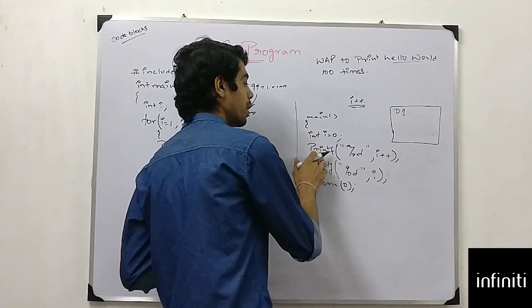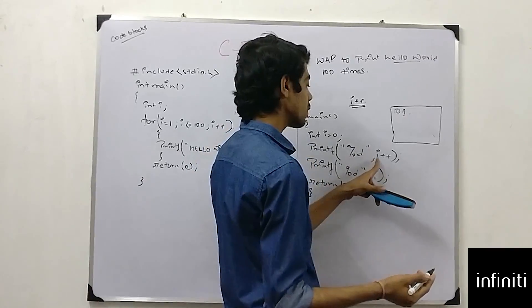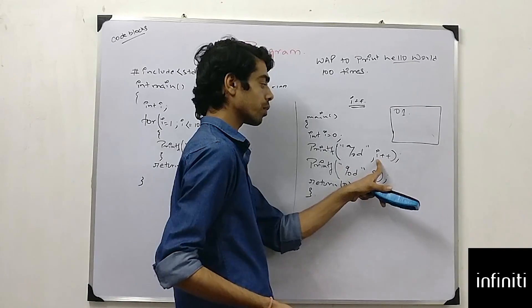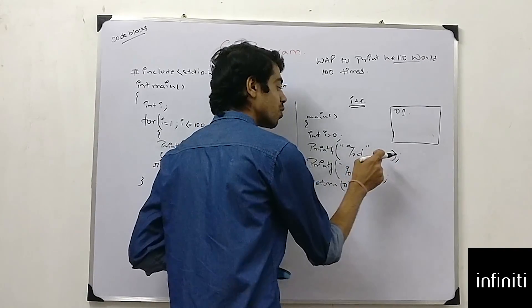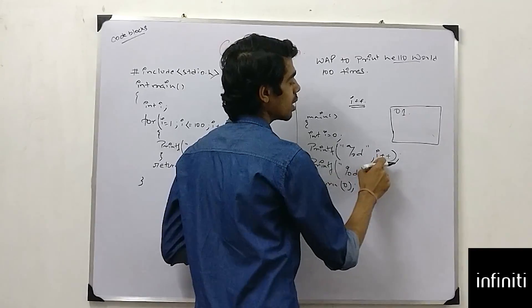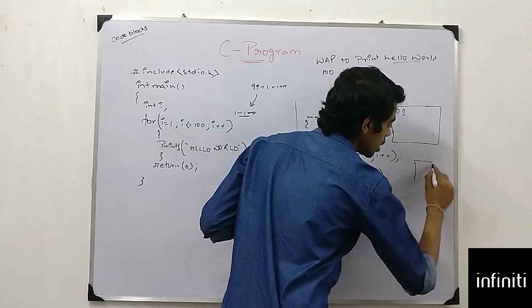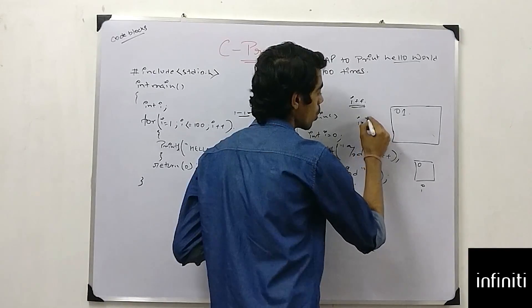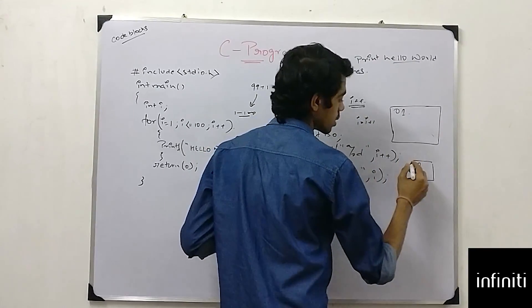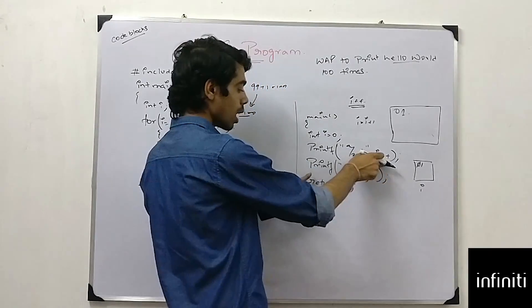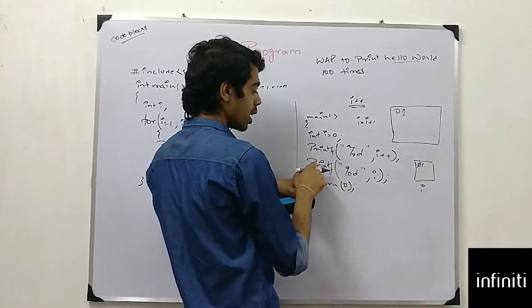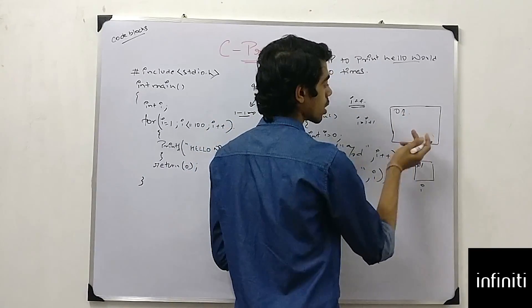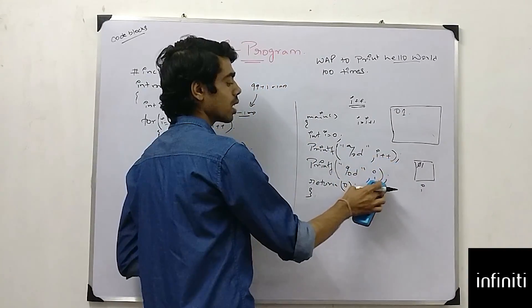First it will read i and then it will increment this thing. Means first it will read zero. As well as it reads zero, it will print zero. It will print zero and then in the memory, it will convert itself to i is equal to i plus one. Means i plus plus. Means zero will be converted to one. Now, in the next line, if I write printf percentage d i, it will print i as one. So, this is the answer for i plus plus and i.